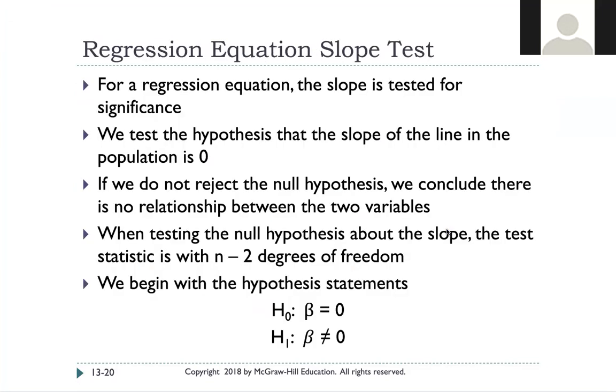You can do the same thing that we did earlier where we tested for significance. You can do a hypothesis test with the slope of the line. So if you don't reject the null hypothesis, you can conclude that there is no relationship between the two variables and vice versa for the alternate. And then when we're testing the null hypothesis, our test statistic is going to use n minus two degrees of freedom.